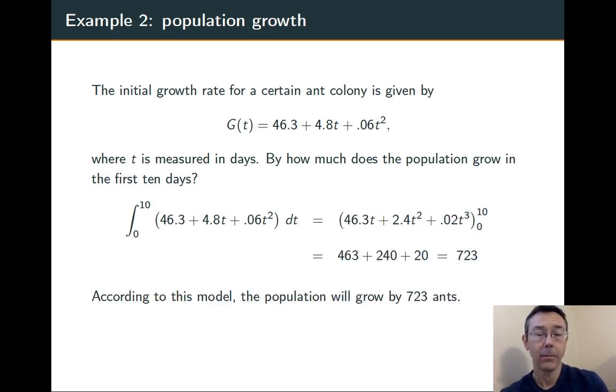We're going to anti-differentiate, go through each of those terms, raise the power by one and then divide by that new power, plug in the endpoints, overall we get 723. According to this model, the population will grow by 723 ants over that time interval.